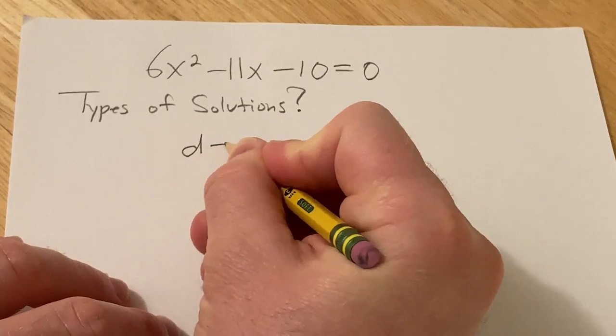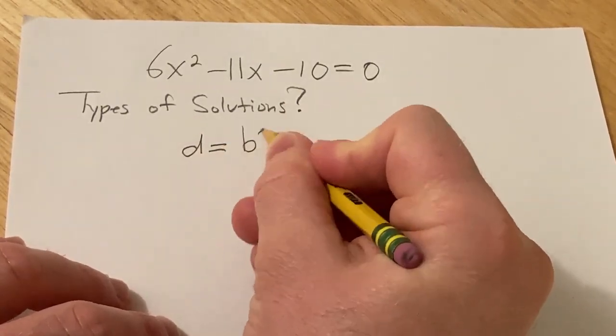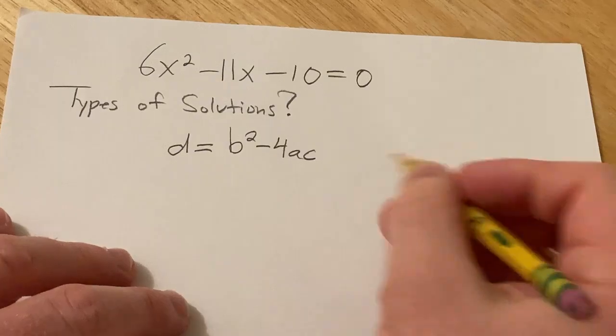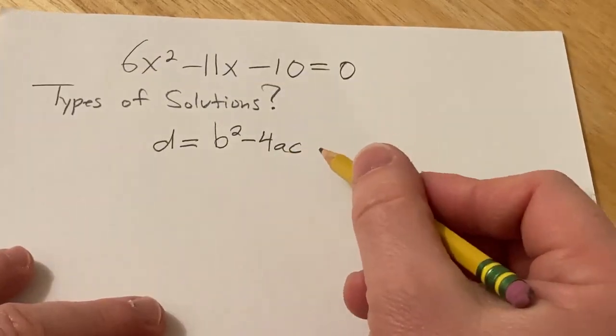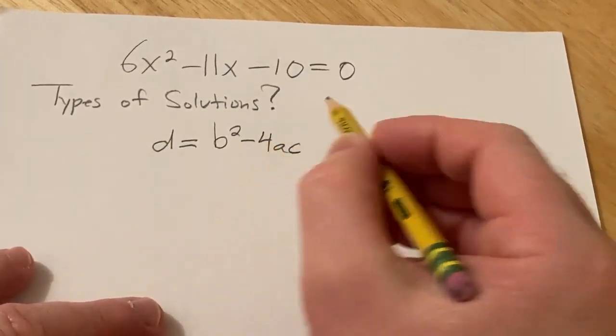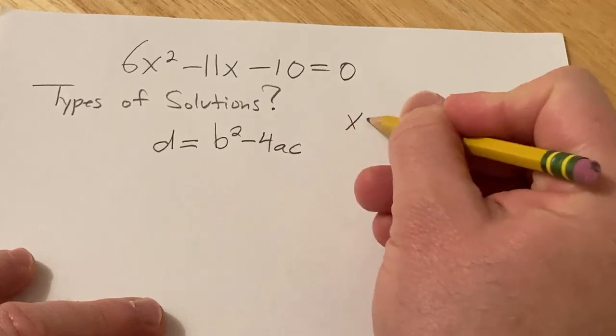So the discriminant is d equals b squared minus 4ac and this comes from the quadratic formula. This is the part that's inside the square root in the quadratic formula.